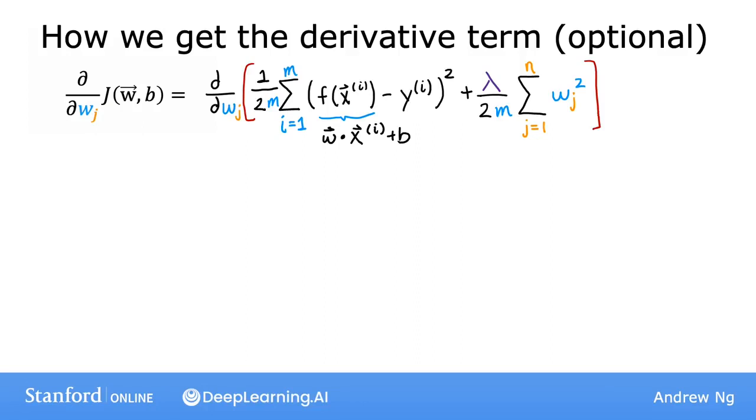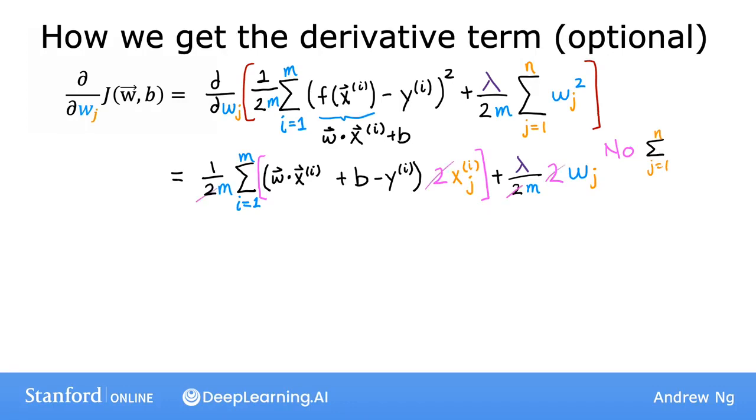And it turns out that by the rules of calculus, the derivatives look like this: 1 over 2m times the sum i equals 1 through m of (w dot x plus b minus y) times 2x_j, plus the derivative of the regularization term, which is lambda over 2m times 2w_j. Notice that the second term does not have the summation term from j equals 1 through n anymore. The 2s cancel out here and here, and also here and here. And so it simplifies to this expression over here.